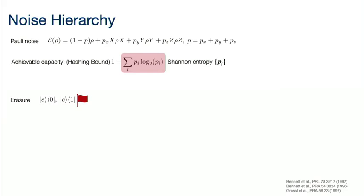You can also have what is called an erasure channel, where the qubit 0 and 1 states are replaced by some erasure state and you as a user get a flag that the error has actually happened — so you know the location of the error, but you still don't know what actually happened and you need to go back and fix the qubit. You can also have what is called biased erasures, where you go to the erasure state only if the qubit had started in the one state. If you have erasures, you can actually exactly know what the capacity of the channel is.